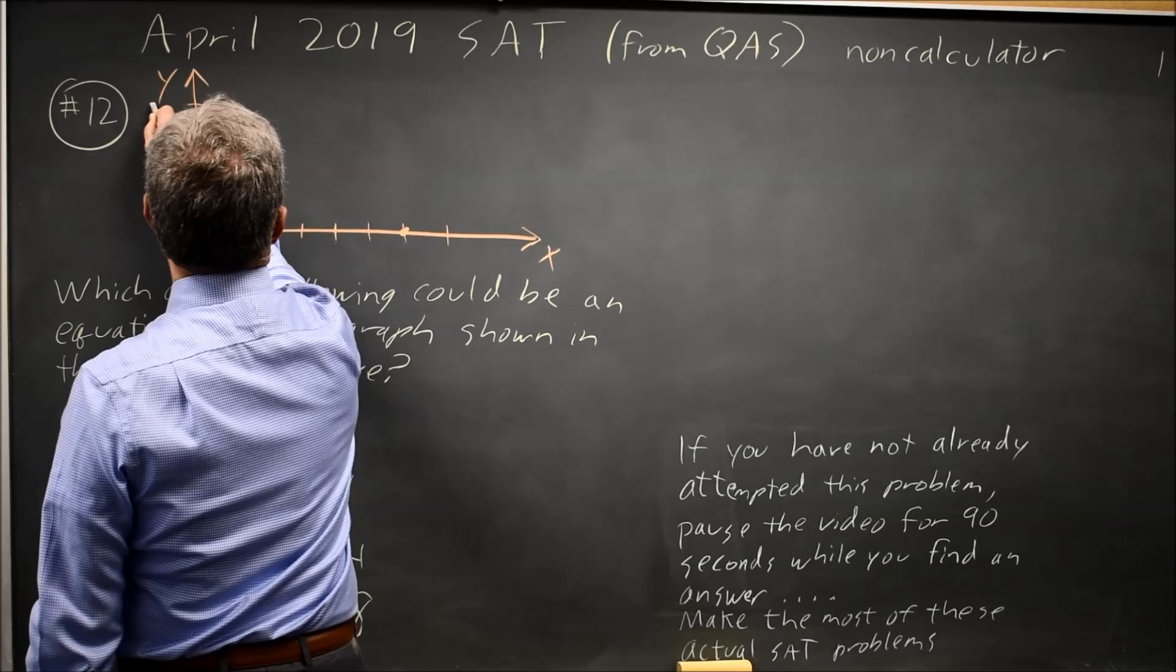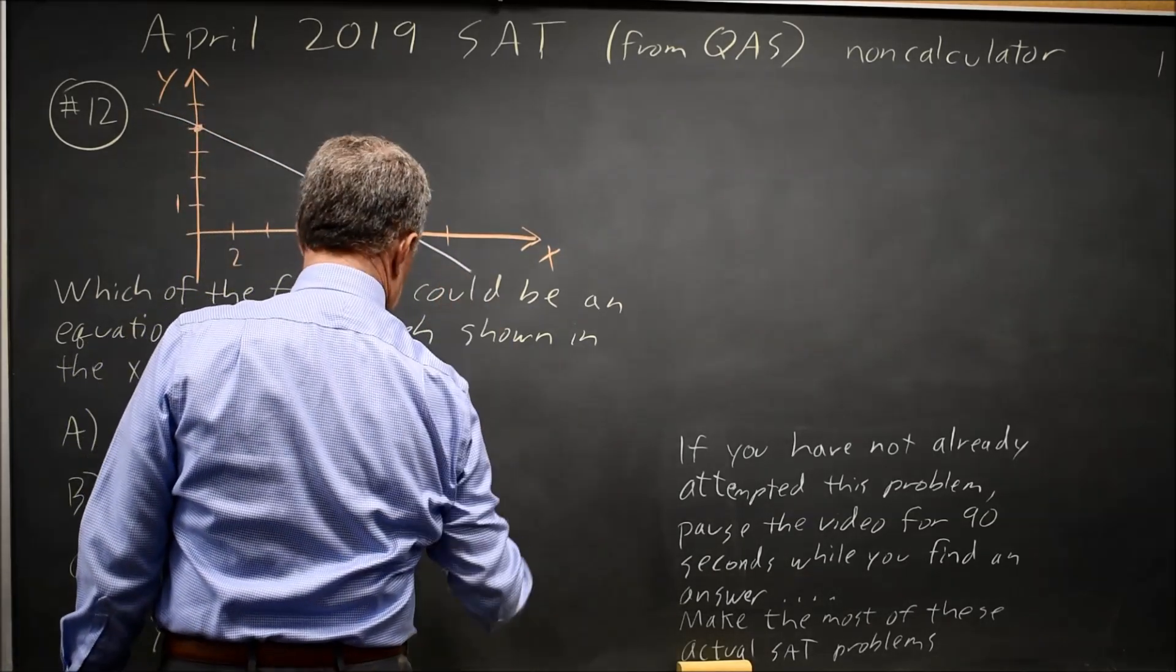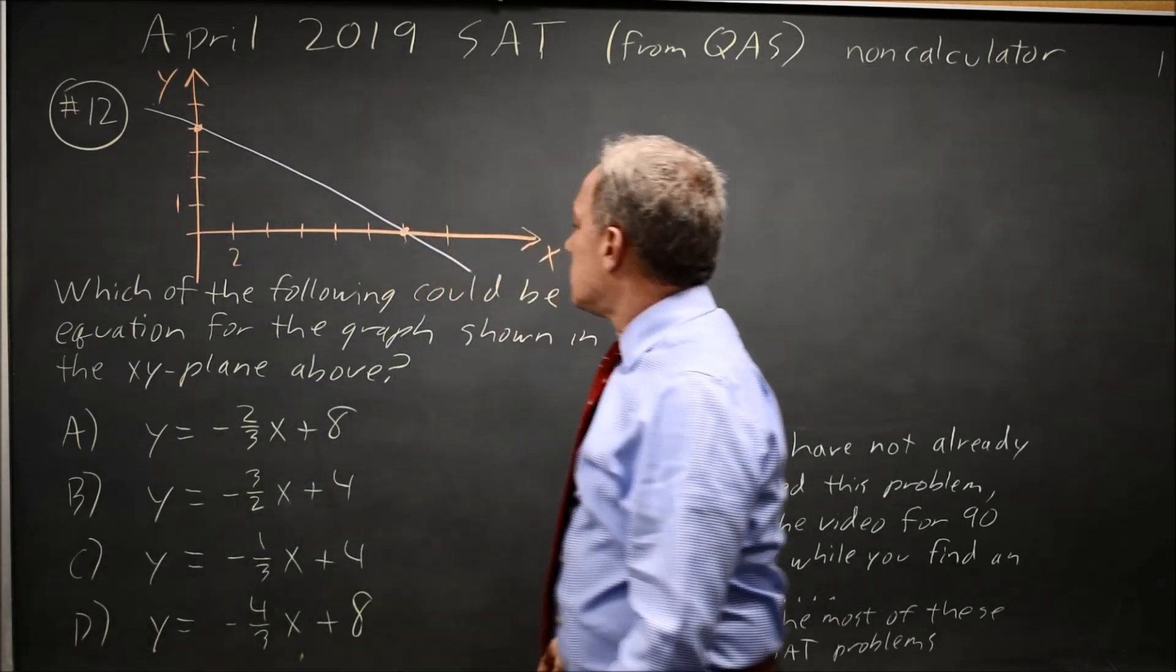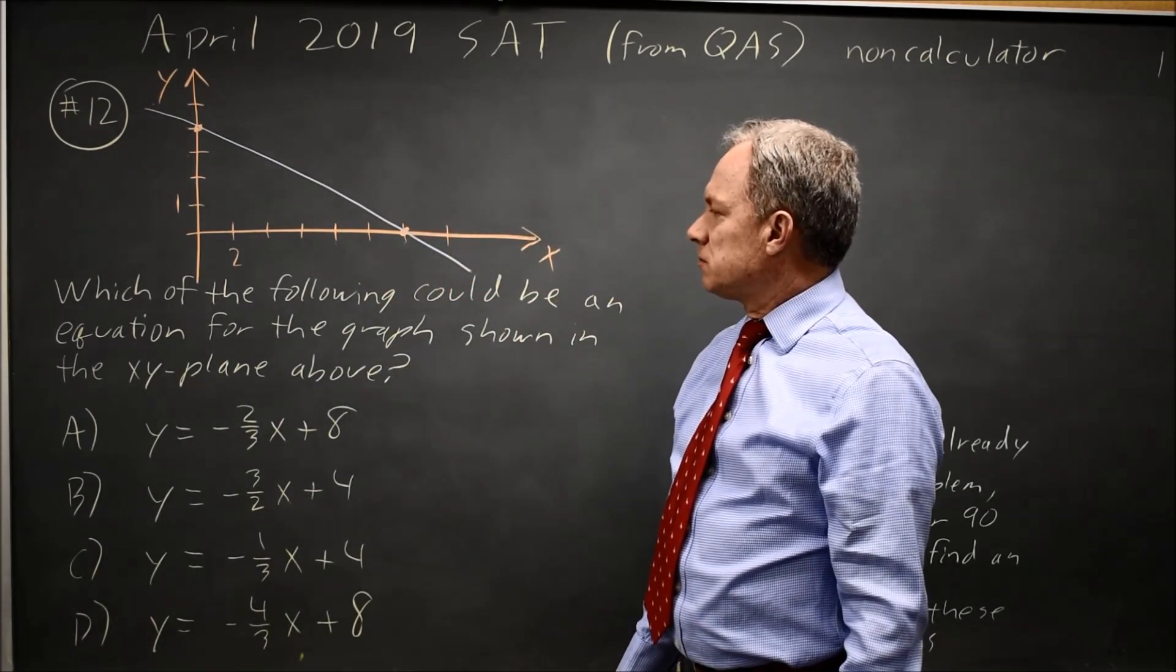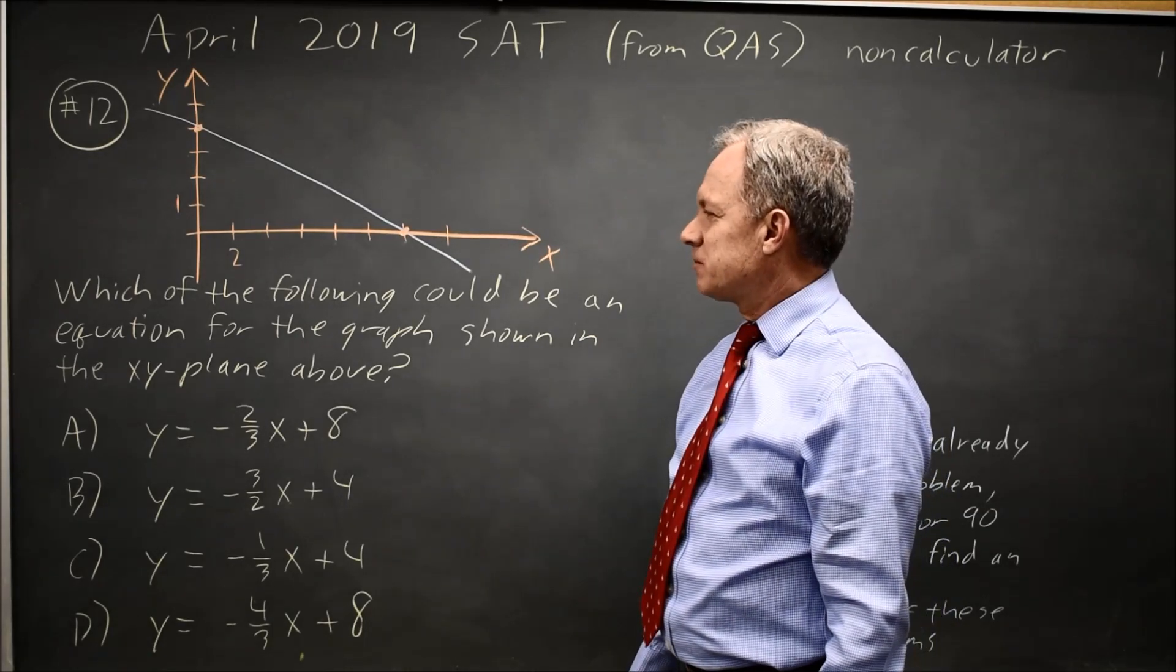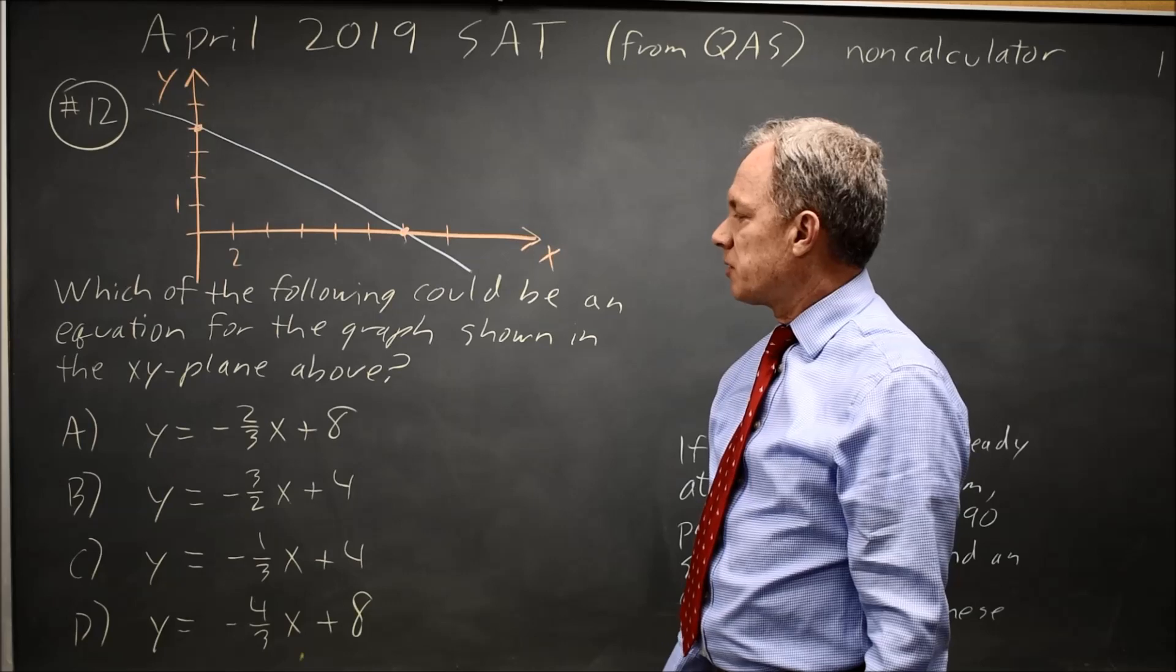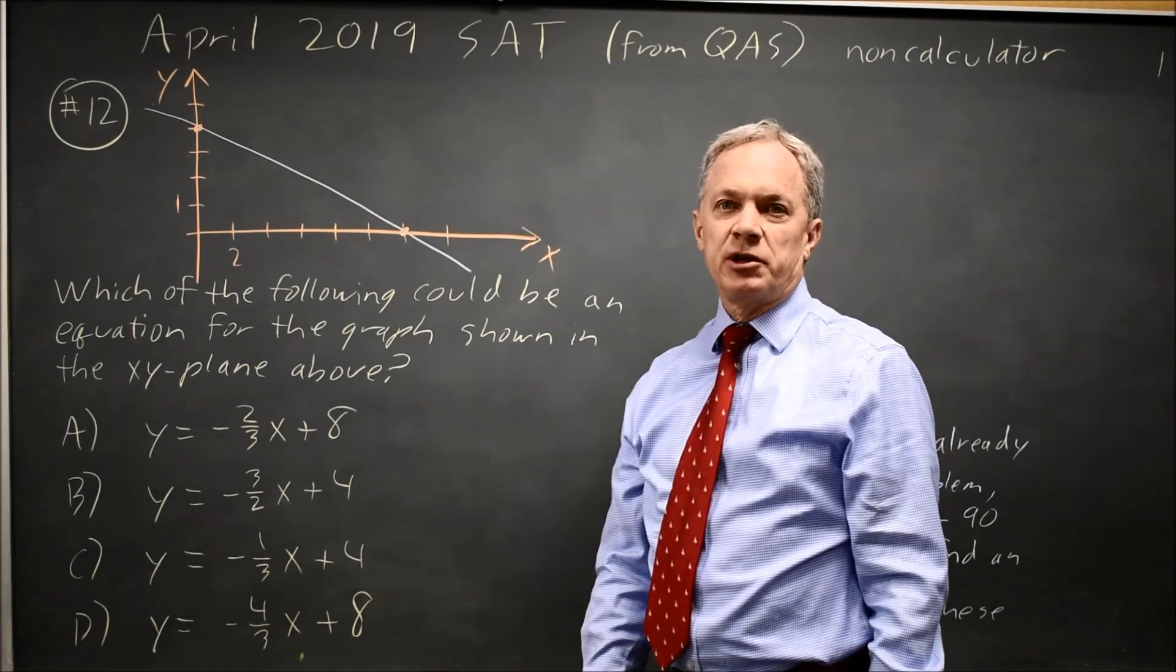And I forgot to sketch their actual line, so I'll put that in. Their question here, maybe pause it again now that you know what the question is. Which of the following could be an equation for the graph shown in the xy plane above? And they give you four equations.